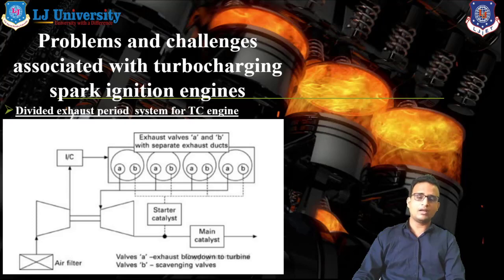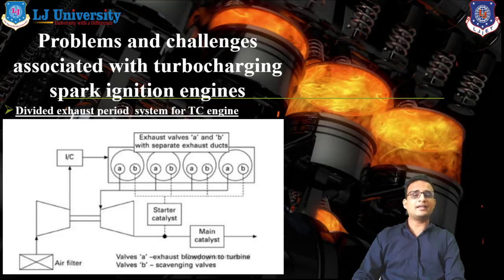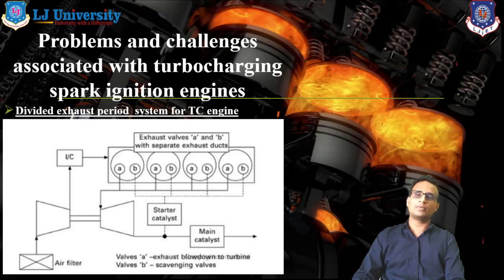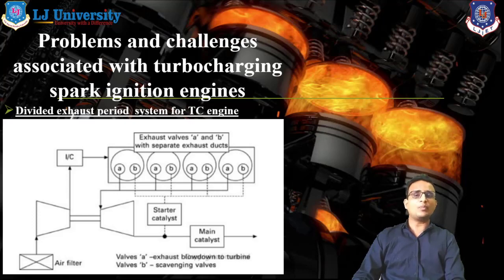Basically there are two types of wall: wall A and wall B. Wall A directs exhaust blow-down to the turbine, and wall B handles scavenging. As we know, in four-stroke IC engines the piston works as a pump and helps to eliminate the scavenging effect. Wall B, working as a scavenging wall, guides the exhaust coming out from the engine and directs it towards the catalytic converter. Wall A directs exhaust towards the turbine system, allowing us to run the turbine effectively and use exhaust energy properly.